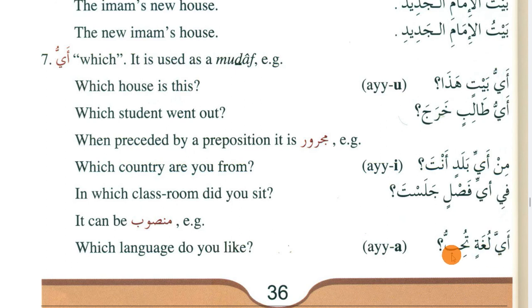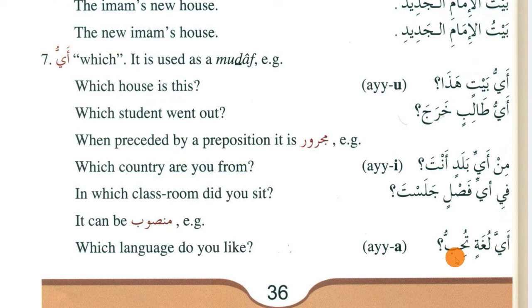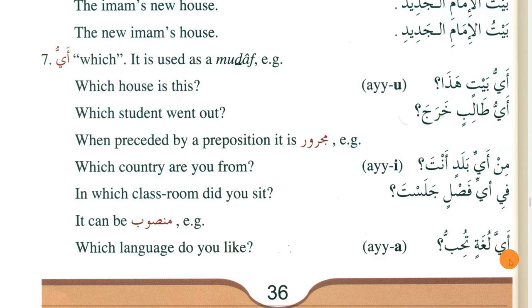In the sentence 'ayya lugatin tuhibbu?' — which language do you like — 'tuhibbu' is a verb (fi'l). The action of this verb is done on the language being talked about. The answer would be 'uhibbu al-lughat al-arabiyya'. So 'uhibbu' is the verb and 'al-lughat al-arabiyya' is the maf'ool bihi (direct object), which is mansoob. Since 'ayya' stands for that maf'ool bihi, it is also mansoob (fatha).